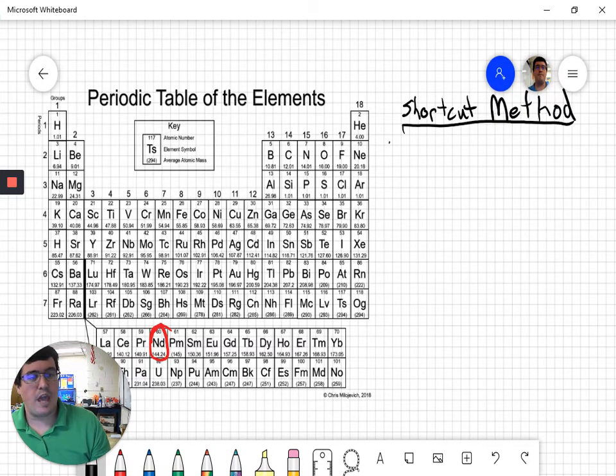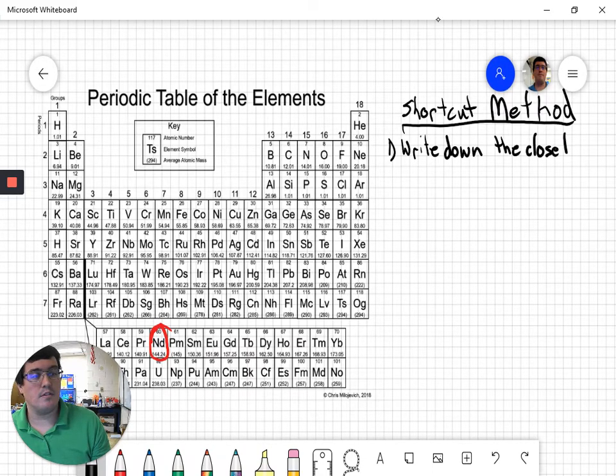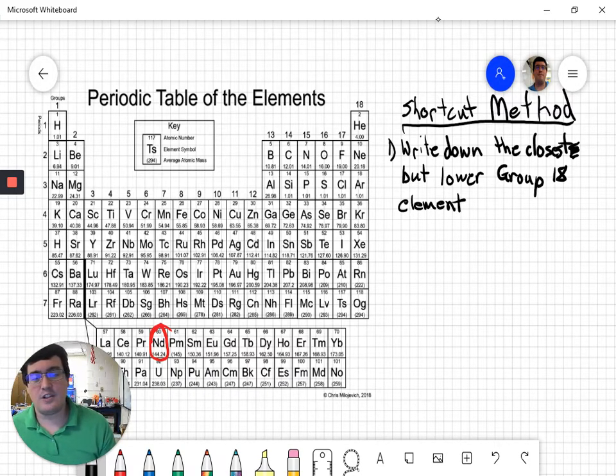So on the shortcut method, what you're able to do is you're able to start by writing down the closest but lower group 18 element. So what we're going to do is we're going to find the closest but lower than 60 group 18 element that we can find.